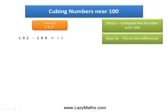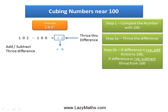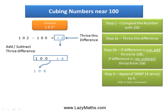The next step is to thrice the difference. Thrice of positive 2 is positive 6. Then add 100 to 6, which gives us 106. The last step to get part 1 of the answer is to append four zeros, or multiply 106 by 10,000. So we get 1,060,000 — this becomes part 1 of the answer.